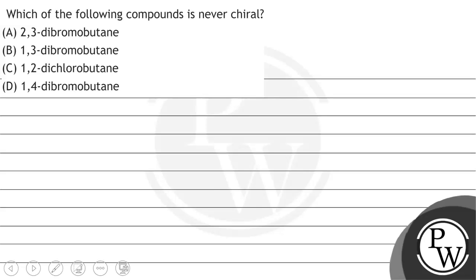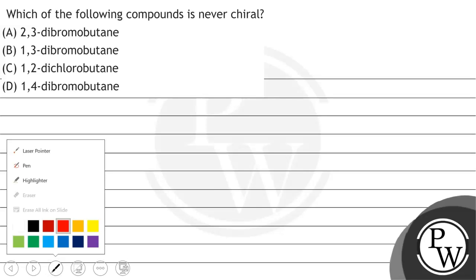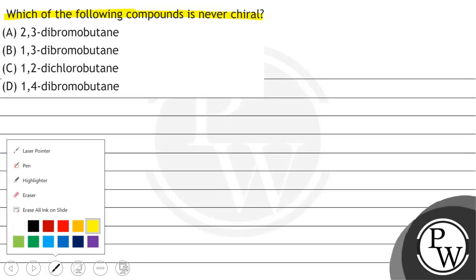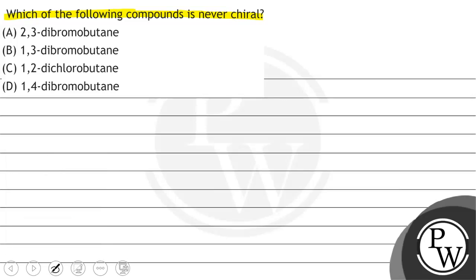Hello, let's read the question. The question says that which of the following compounds is never chiral? We will solve this question. First of all, we will see what will be the key concept within the question. The key concept within the question will be a chiral carbon.